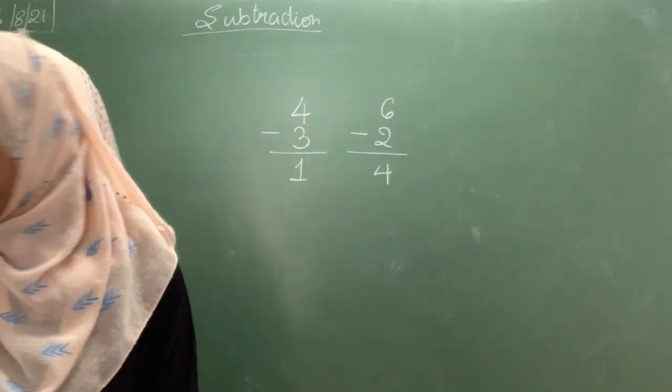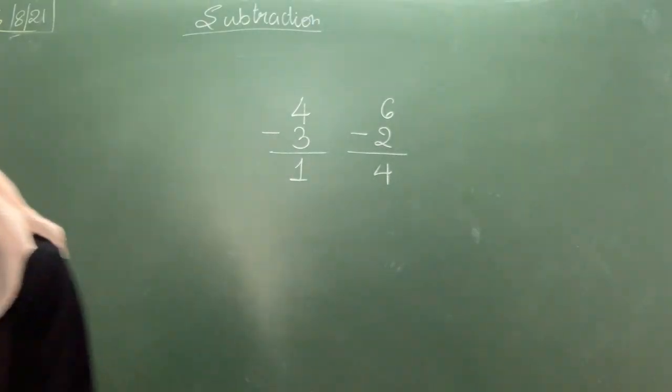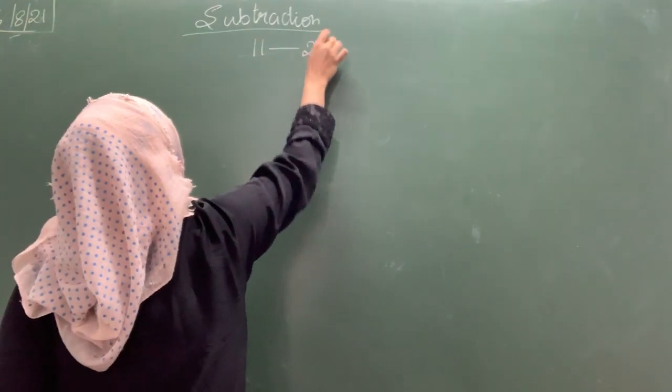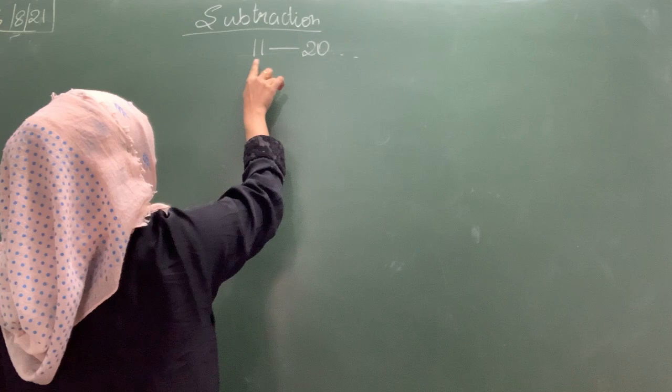This we have already finished. Let us do with big numbers, which is from 11 to 20. These are all 2 digit numbers.